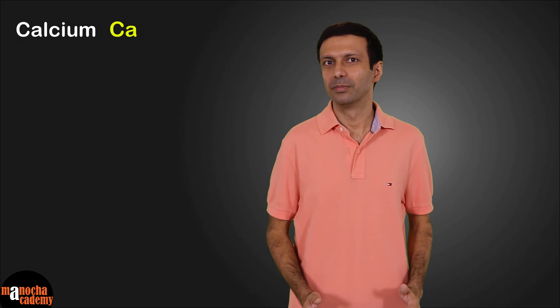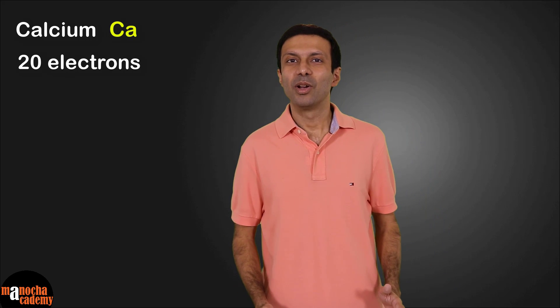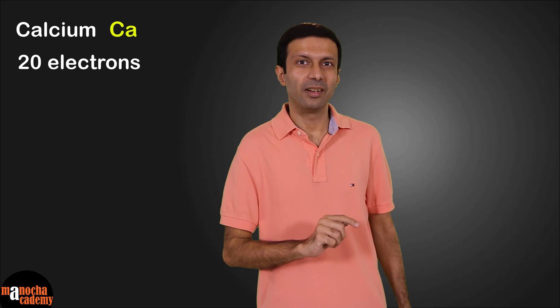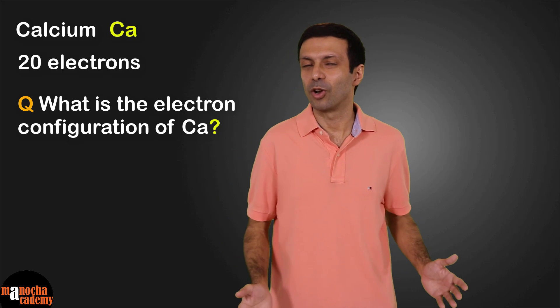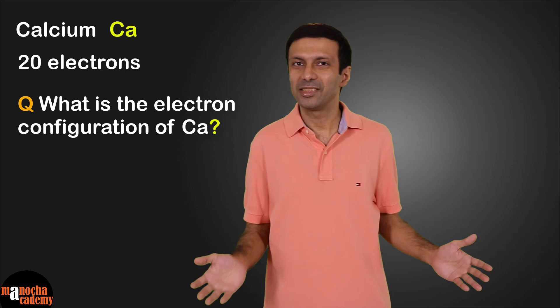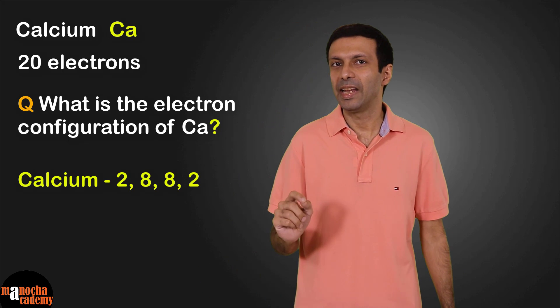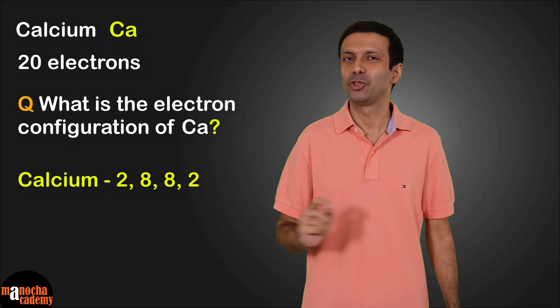Next, let's try calcium. The calcium atom has 20 electrons. This time, why don't you pause the video here and try to get the electron configuration yourself. So what did you get? The correct answer is 2,8,8,2.